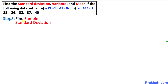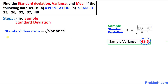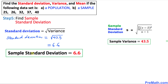In the final step, we calculate the sample standard deviation. The standard deviation is simply the square root of the variance. We already calculated the sample variance as 43.5, so the sample standard deviation is the square root of 43.5, which gives us 6.6. And that is our answer.